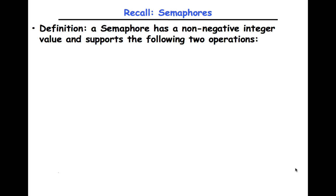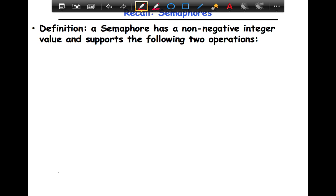So semaphores - I'll first define them and then we'll look at places where they're used. Simply put, a semaphore is a non-negative integer that has a value associated with it, and it supports the following two operations. There are only two operations that really occur on a semaphore, and it's a non-negative integer value between zero and some number n.